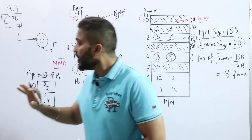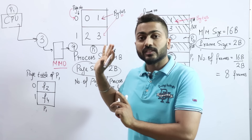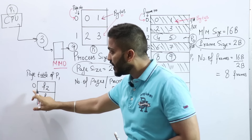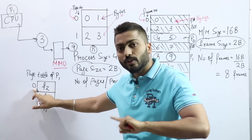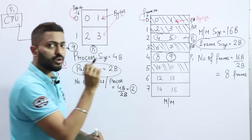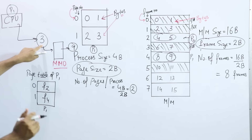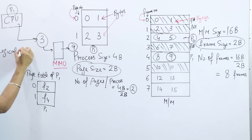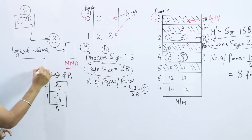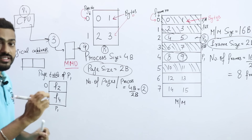So whenever the CPU demands a byte — let's say it asked for byte number 3 — we first need to find out which page number that byte belongs to. Once we know the page number, we go to that page number in the page table, find the corresponding frame number, and fetch the data from there. Byte number 3 could be in page 0 or page 1. If it's in page 1, then we go to frame number 4 and pick the data from there. But how do we actually figure this out? The CPU always works on logical addresses.